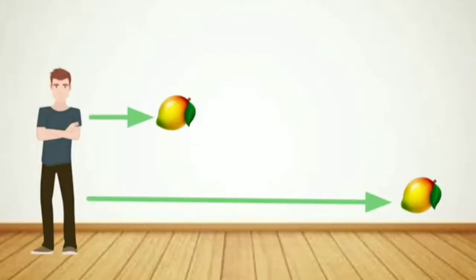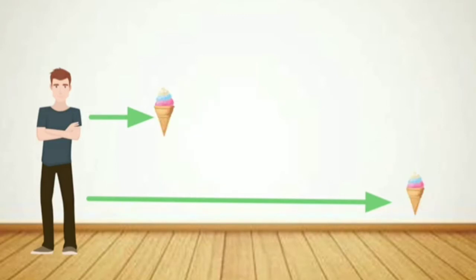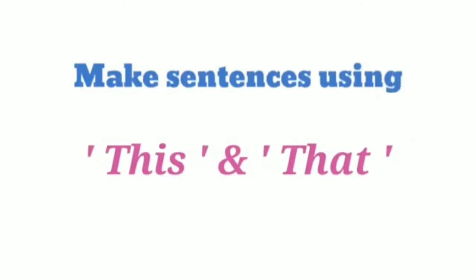We will see some examples of this and that. Children, can you see — one mango is near to me, so I'll write 'this'; and another mango is far from me, so I'll write 'that'. The first ball is near to me so I'll write 'this', and the second ball is far from me so I'll write 'that'. The first ice cream is near to me so I'll write 'this'; the second ice cream is far from me so I'll write 'that'.